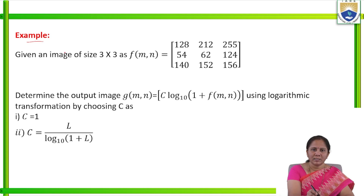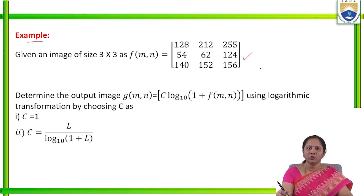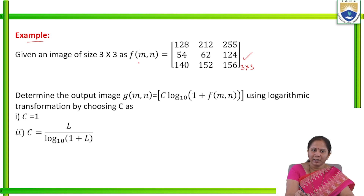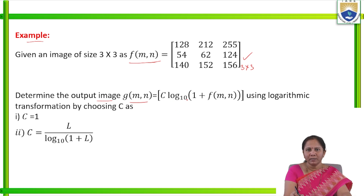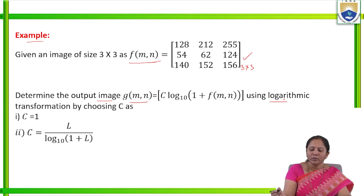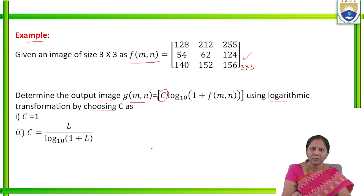Let us consider one example. Given an image of size 3 by 3 — this is the given image and its size is 3 by 3, meaning it has 3 rows and 3 columns. The image is represented as f(m, n). We have to determine the output image. The input image is represented as f(m, n) and the output image is g(m, n). A transfer function is given: g(m, n) = c · log₁₀(1 + f(m, n)). Using logarithmic transformation, we have to consider two cases of c.